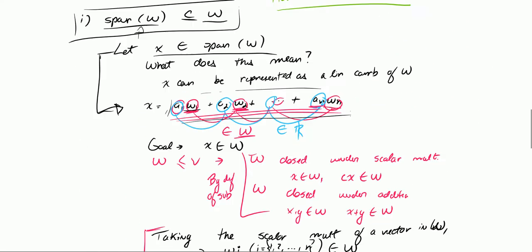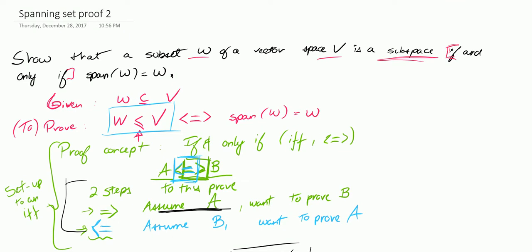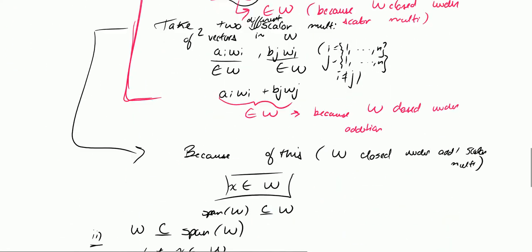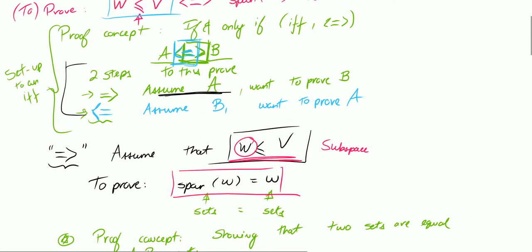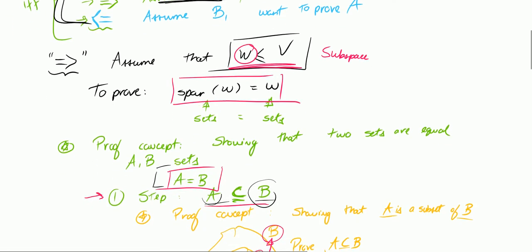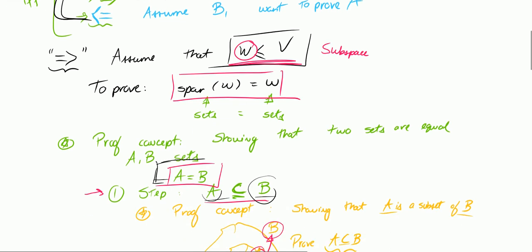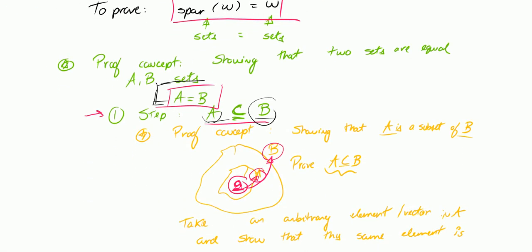In this video, I'll be continuing on the last video I posted about a proof where I'm showing that a set W of a vector space V is a subspace if and only if span W is equal to W. I gave some pretty detailed proof concepts on how to show an if and only if, and the equality of sets, because I first started with the first direction of the proof where I assumed that W was a subspace of V and wanted to prove that span W is equal to W. I explained that we need to show A is a subset of B and B is a subset of A.